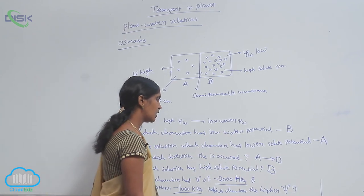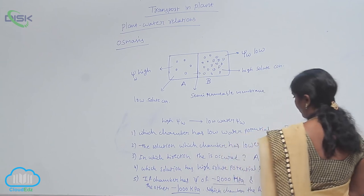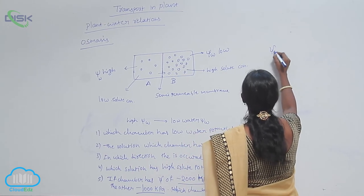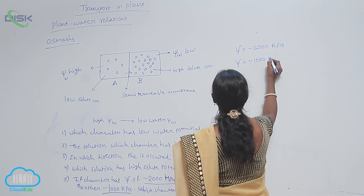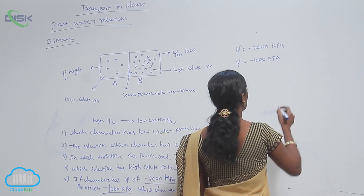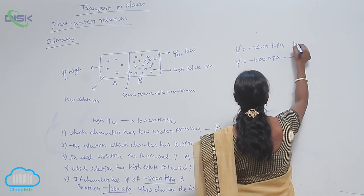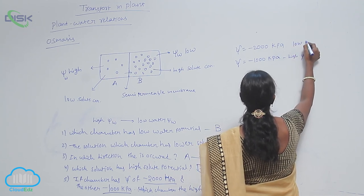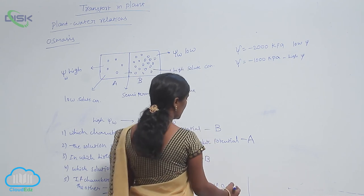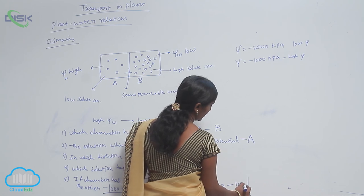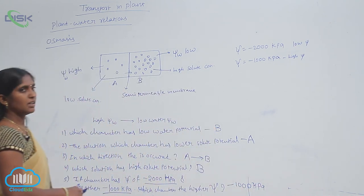The question is: which chamber has the higher water potential? One chamber is minus 2000 kilopascals, another is minus 1000 kilopascals. Minus 1000 kilopascals has a higher water potential compared to minus 2000 kilopascals. So the chamber with water potential equivalent to minus 1000 kilopascals has the higher water potential.